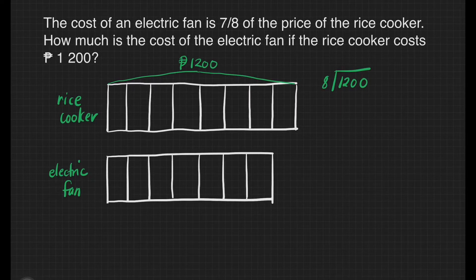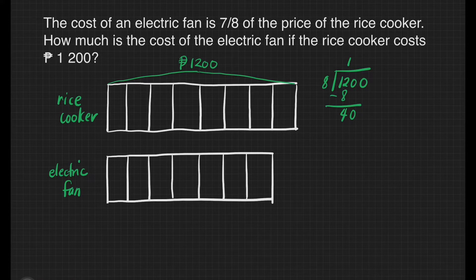How many eighths are there in 12? We have 1. 1 times 8 is equal to 8. 12 minus 8 is equal to 4. Bring down 0. How many eighths are there in 40? 5. 5 times 8 is equal to 40. Subtract, then bring down 0. How many eighths are there in 0? That's 0.